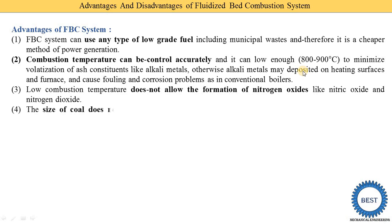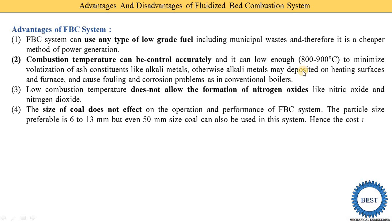The fourth advantage is that the size of coal does not significantly affect the operation and performance of the FBC system. The preferable particle size is 6 to 13 mm, but even 50 mm size coal can also be used. Hence the cost of coal crushing is reduced, unlike in pulverized fuel systems where coal must be crushed to a very small size before use.